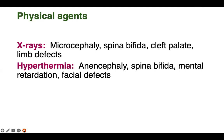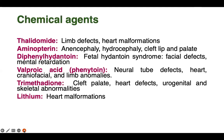Then hyperthermia — we can simply correlate this with severe fever. From any reason, if the body temperature rises, it can lead to anencephaly, spina bifida, mental retardation, and facial defects. So these are the physical agents.